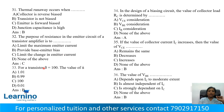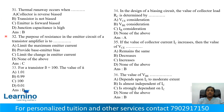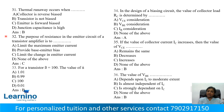Question number 33: For a transistor beta equals 100, find alpha. Alpha equals beta divided by 1 plus beta. So alpha equals 100 divided by 101, which equals 0.99. Option A: 1.01, Option B: 0.99, Option C: 100, Option D: 0.01. Correct answer is Option B: 0.99.